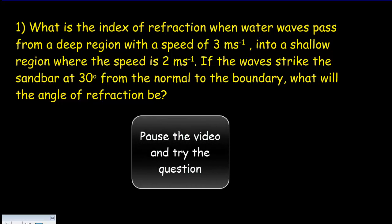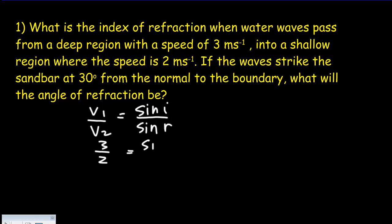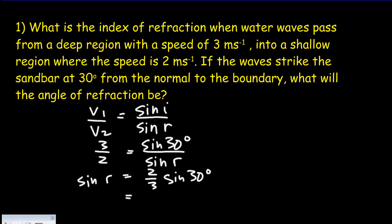In the first problem, we have a known ratio of speeds V1 and V2, and we're dealing with angles. So V1/V2 = sin i / sin r. The speed ratio is 3 to 2, the angle of incidence is 30 degrees, and we need to find the angle of refraction. We get sine r = (2/3) × sin 30°, so r = arcsin(1/3), giving a final answer of 19.5 degrees.